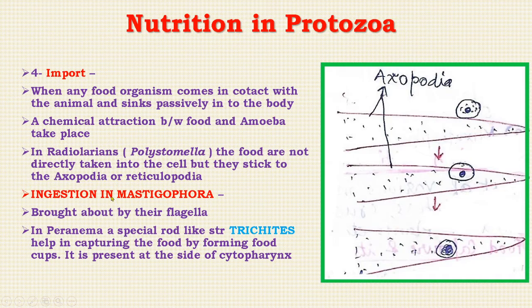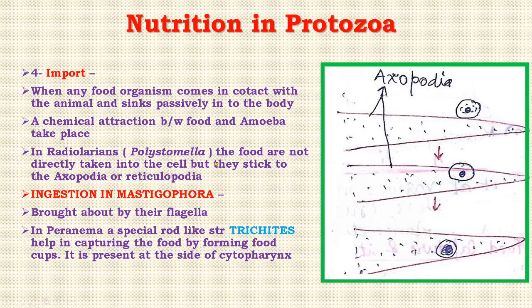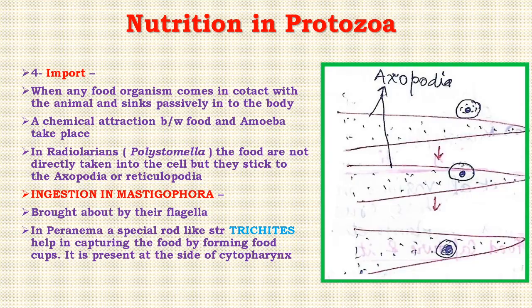Ingestion in Mastigophora and flagellates is brought about by their flagella, which produce water currents containing food particles. The food organism is ingested either at definite sites on their naked body, for example in Bodo, a flagellate, or through their oral apparatus such as in Euglena. In Peranema, a flagellate, special rod-like structures called trichites are present which help in capturing food by forming food cups at the side of the cytostome.